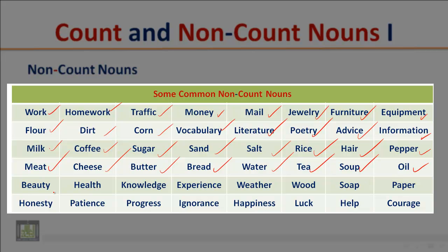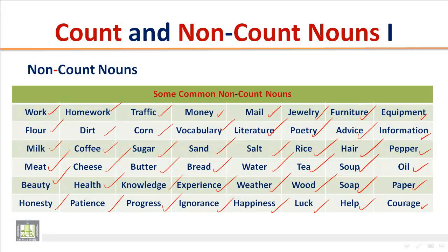Additional non-count nouns: oil, beauty, health, knowledge, experience, weather, wood, soap, paper, honesty, patience, progress, ignorance, happiness, luck, help, and courage.